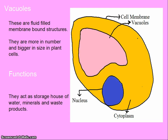Vacuoles. These are fluid-filled membrane-bound structures. They are more in number and bigger in size in plant cells. Functions of vacuoles: they act as a storage house of water, minerals, and waste products in the cell.